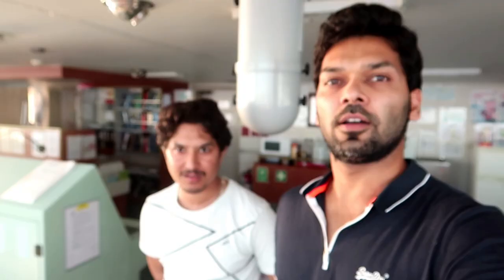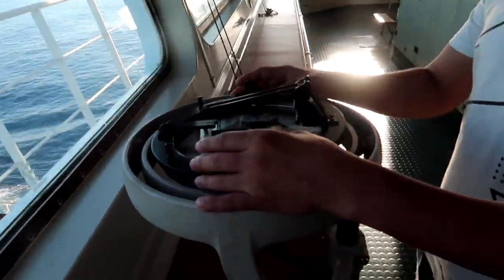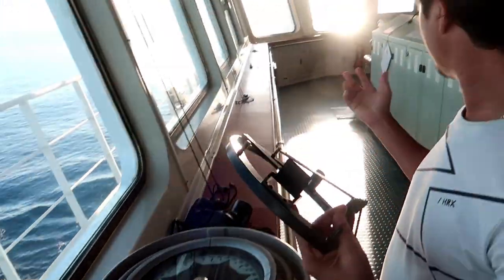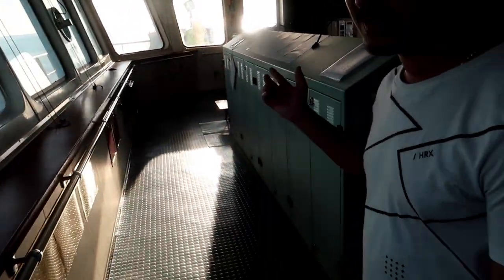Right here with me is the third officer. He's going to help me taking compass error. This is not the first time we are sailing together, this is our second ship. This is a repeater, so we'll take this one out and we have to go to the starboard side.